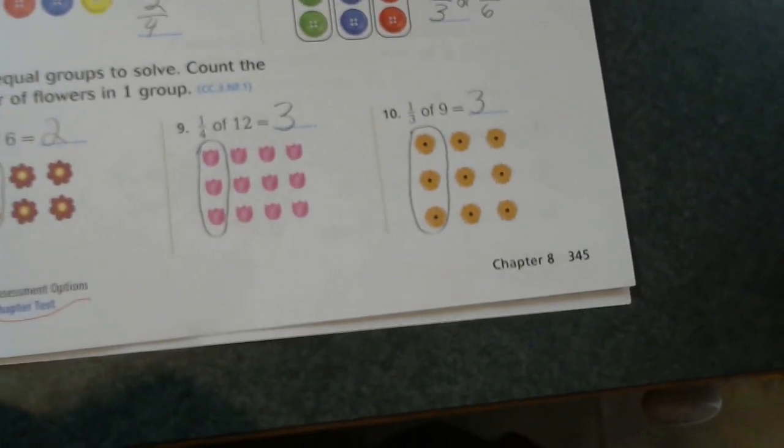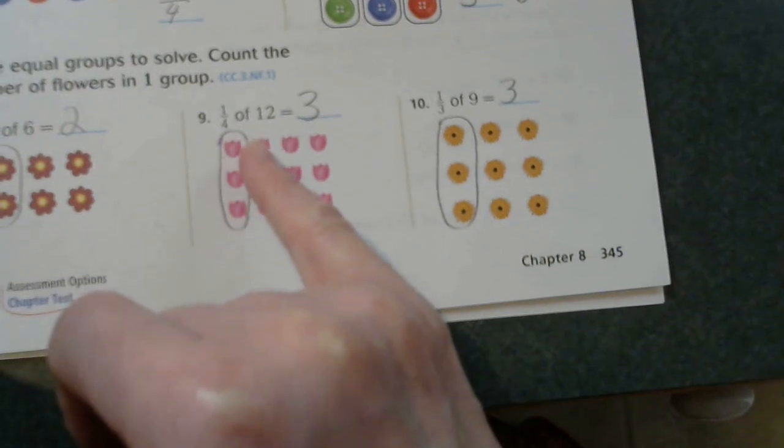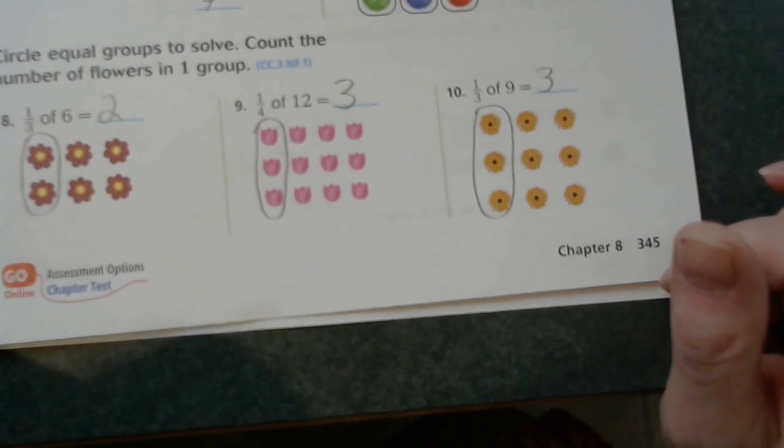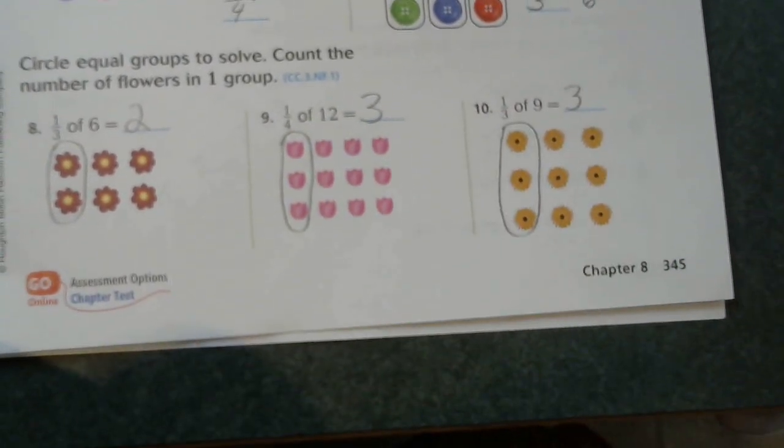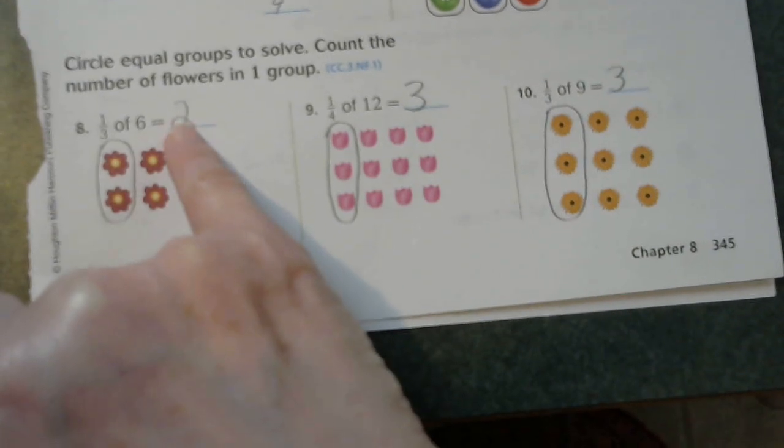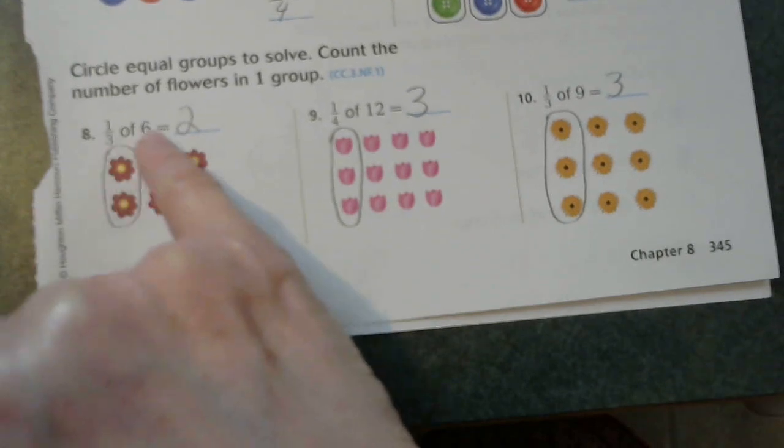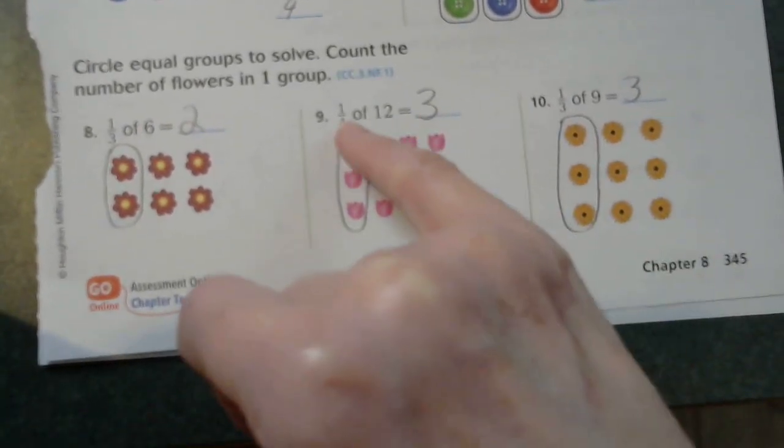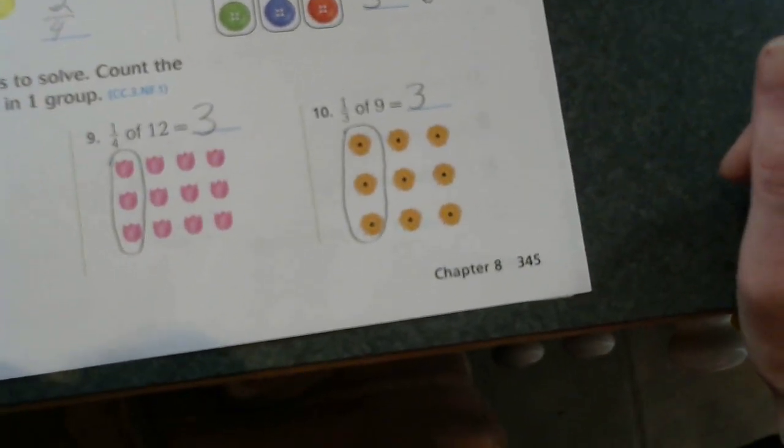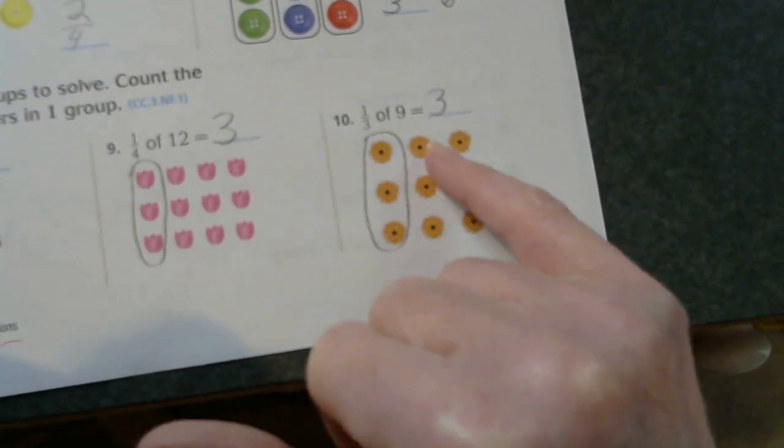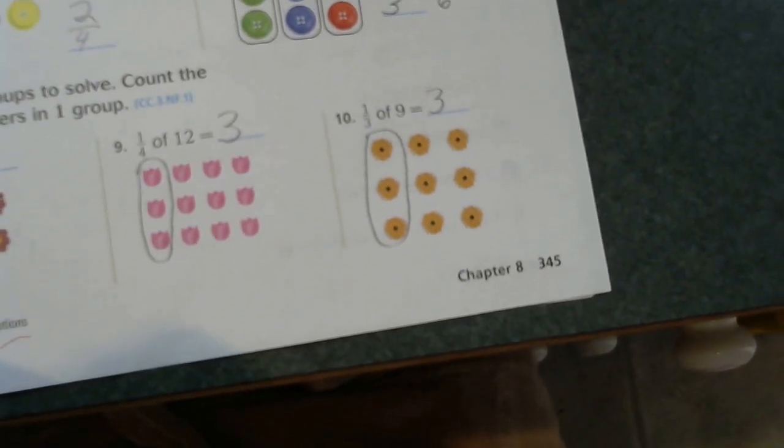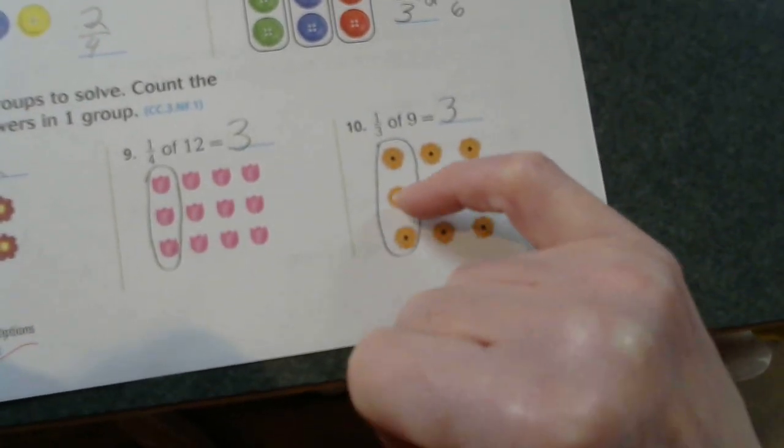Number nine is one fourth of twelve. So they broke twelve into four separate groups. And we have to circle one of those groups. So when we circle one, we have three. Now your check is the denominator multiplied by the number in that group. Three times two equals six. Four times three equals twelve. The next one shows one third of nine. So they made groups of three until they got to nine. Then they circled one of those groups, and in one of those groups is three.